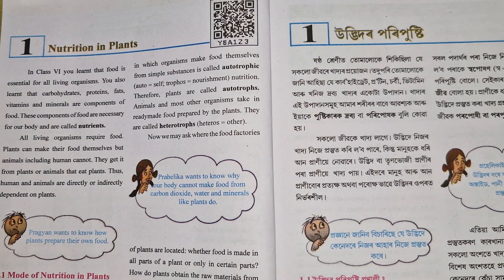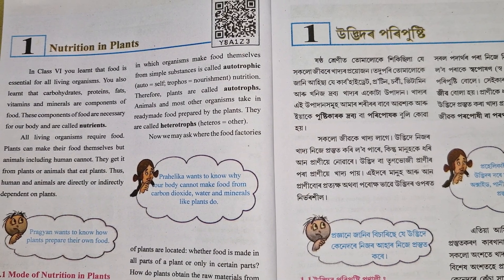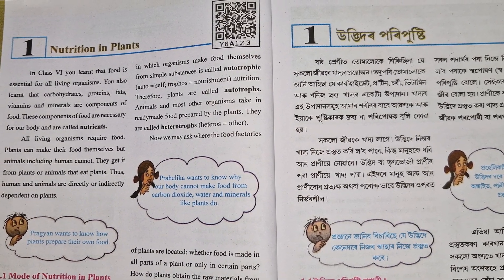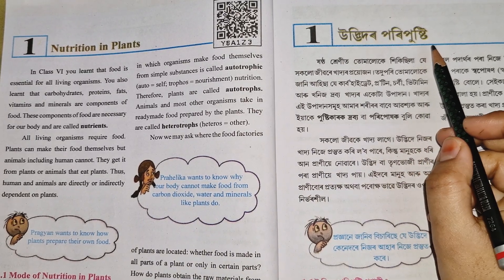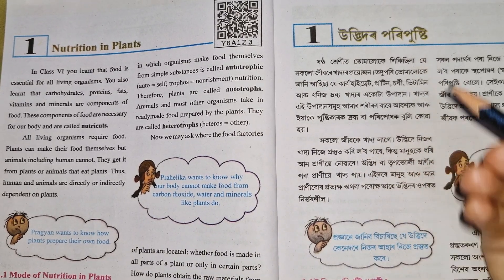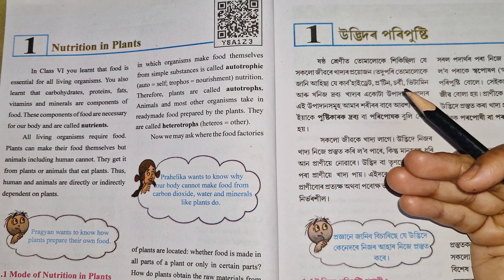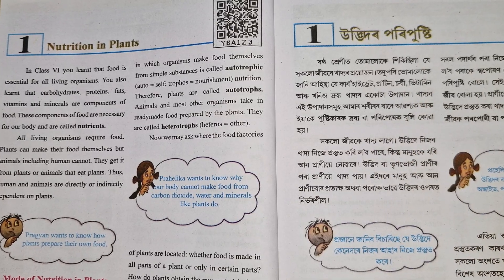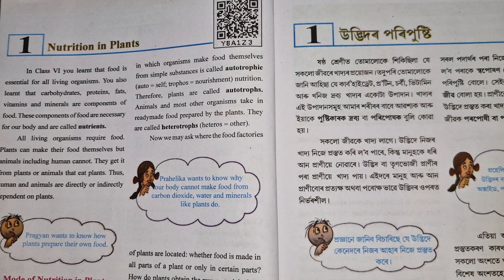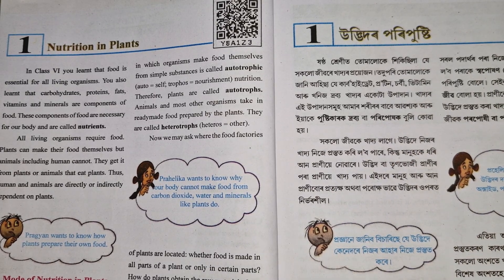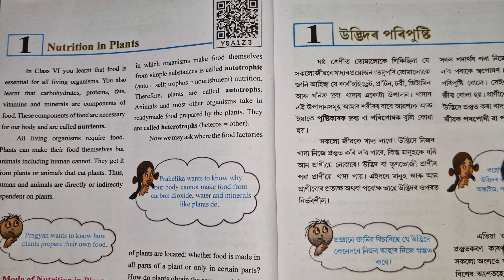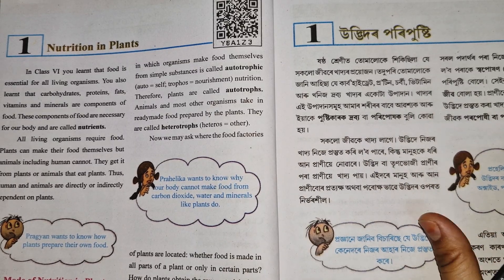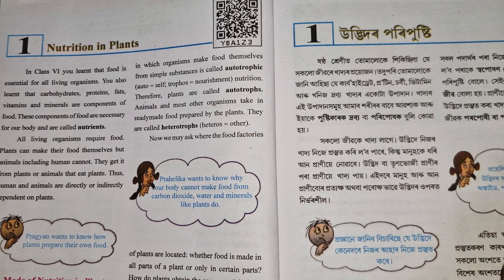Welcome to the Genius Creativity Learning Bundle. This is Class 7 Science, Part 1, Chapter 1: Nutrition in Plants. We will be covering key questions and answers related to this chapter in this video.